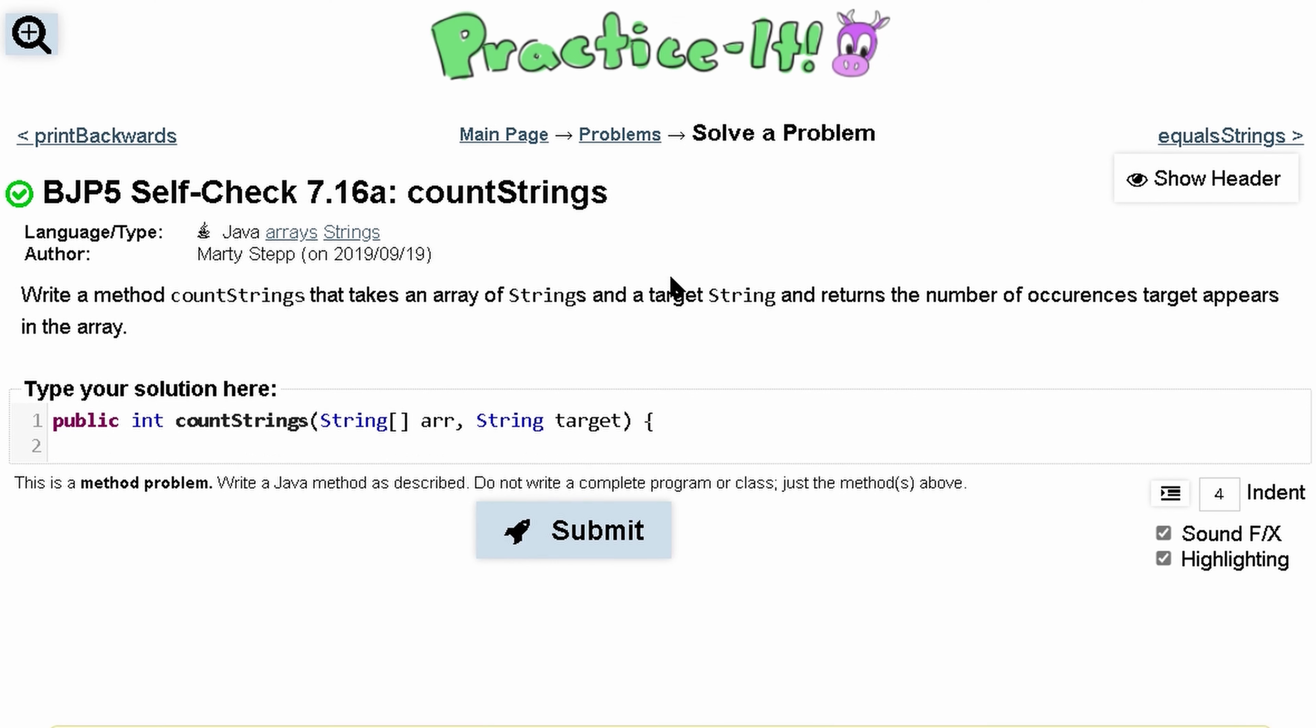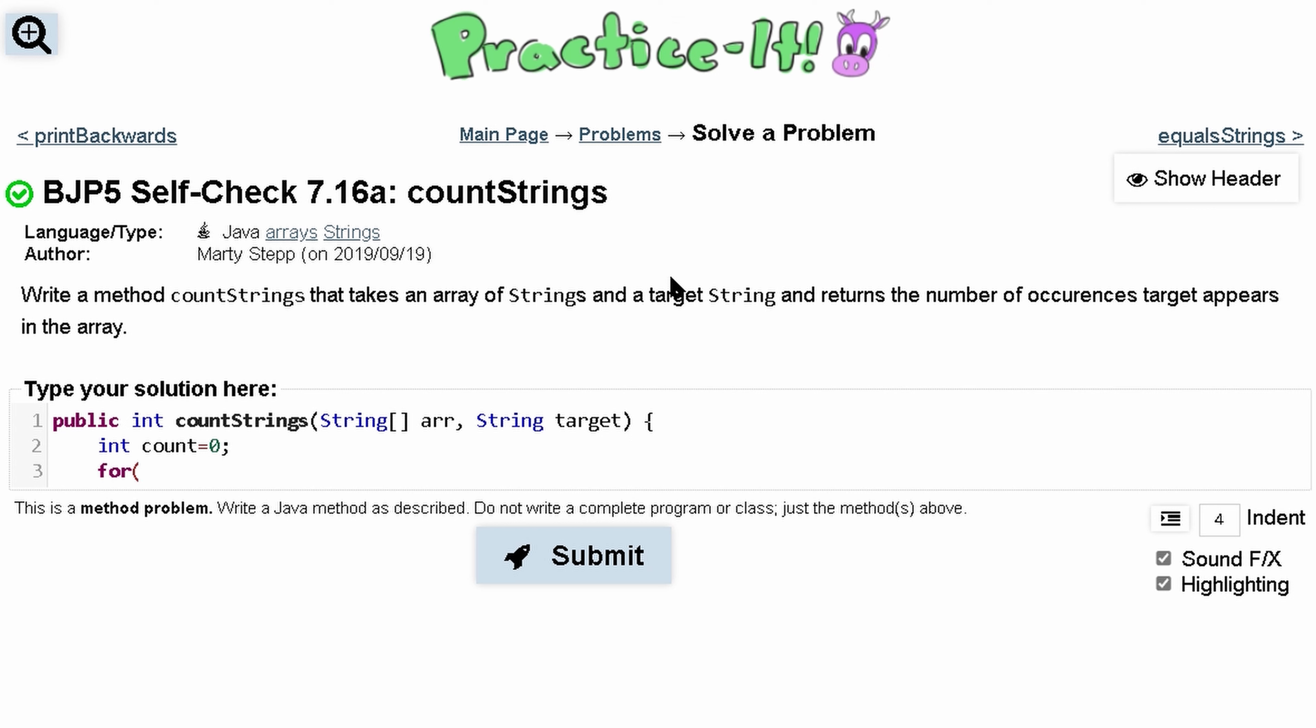Now we also want a counter because this is what we're going to return. We'll do int count equals zero. Initially, we want a for loop to go through this entire array, so we'll do for int a equals zero, and we want to run this as long as a is less than arr.length so we go through every single index, and then we're just going to do a++ so we can eventually break out of here.